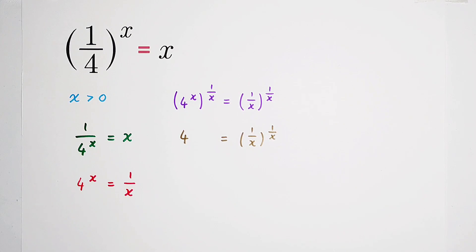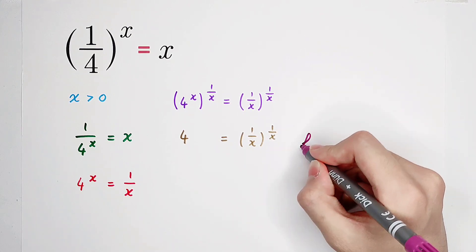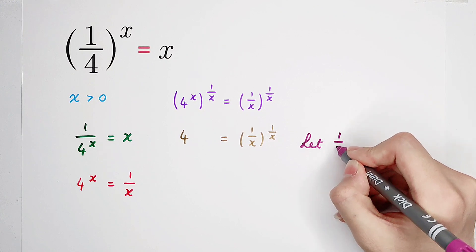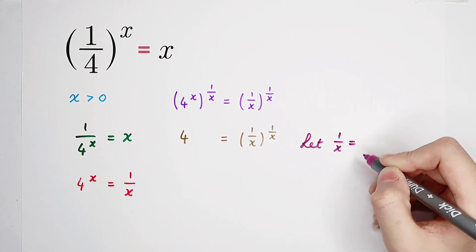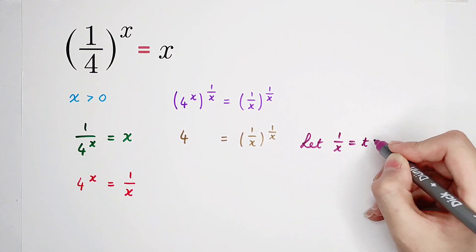Now, of course, we can do a substitution. We can let one over x be written as t, for example.